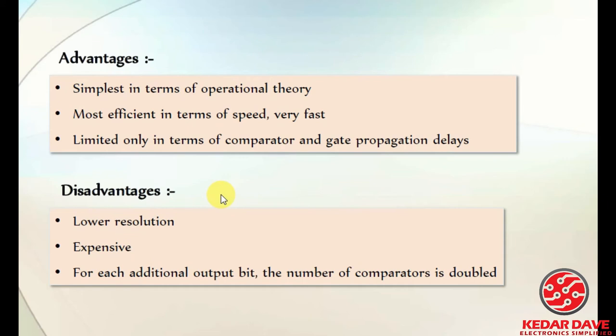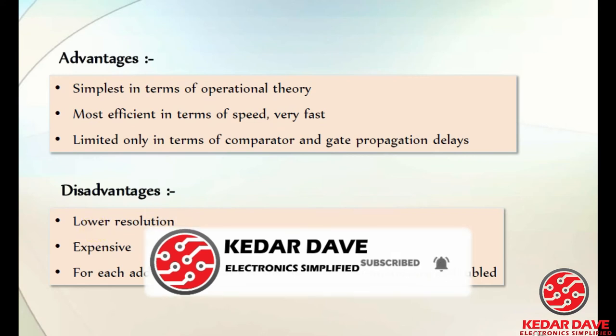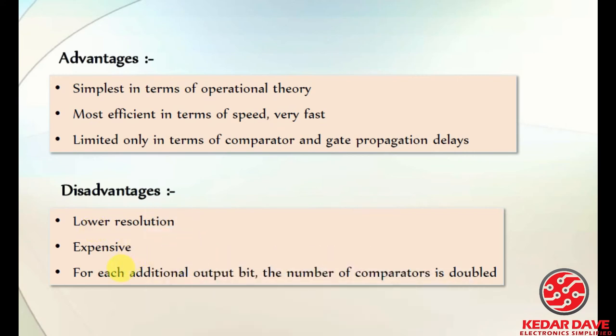The flash ADC is the simplest in terms of operational theory and the most efficient in terms of speed — it is very fast, limited only by comparator and gate propagation delays. The disadvantages are lower resolution and it is expensive because it requires a large number of operational amplifiers and resistors, making the circuit complex. For each additional output bit, the number of comparators is doubled.